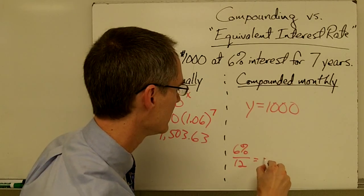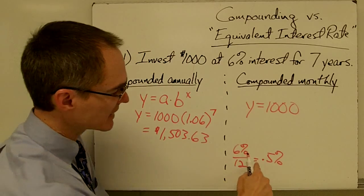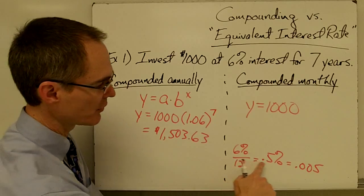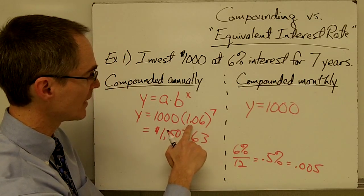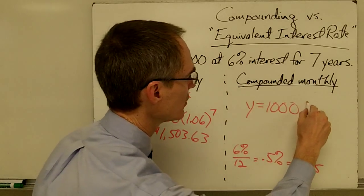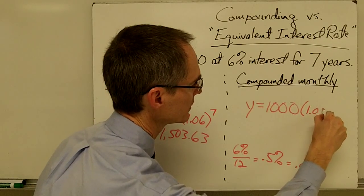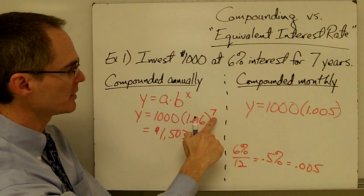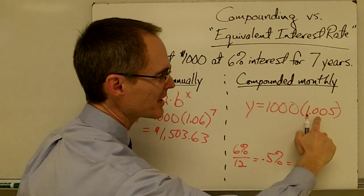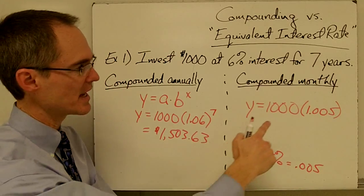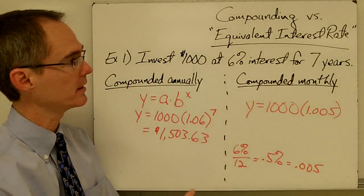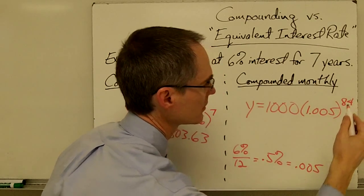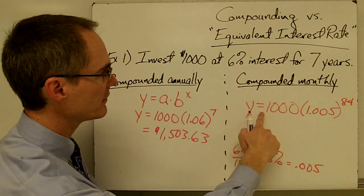Six percent divided by 12 is 0.5%, and expressed as a decimal that's 0.005. That's my growth rate, and to change it into my growth factor I add one, giving me 1.005. Now the exponent is also different — even though I'm still investing for seven years, since I'm compounding monthly the exponent is not seven years but the number of months: seven years times 12 is 84. So my exponent is 84.